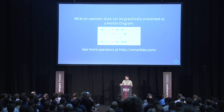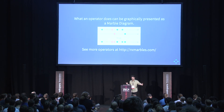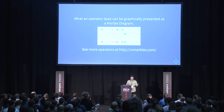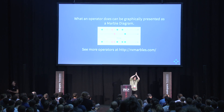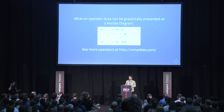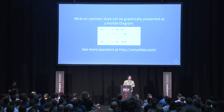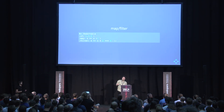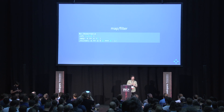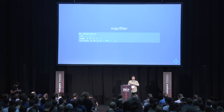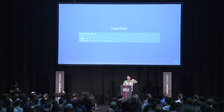For most operators there exists a marble diagram — a graphical representation. For example, the merge operator takes two different streams emitting data at different time intervals and turns them into one. At RxMarbles.com you can see what each operator does — it's a great resource. You'll recognize operators like map and filter from Lodash and JavaScript itself. Here you can see we add one to each value, then apply a filter — functions applied one after another.